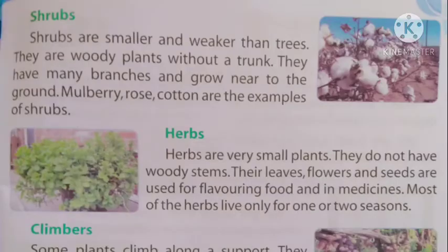अब आते हैं shrubs के बारे में जानते हैं। Shrubs means झाड़ियाँ - जो झाड़ियों वाले पौधे होते हैं जिनमें बहुत ज़्यादा branches होती हैं। Shrubs are smaller and weaker than trees. They are woody plants without a trunk but with many little branches growing near to the ground. Mulberry, rose, cotton are examples of shrubs. शहतूत, गुलाब, कपास ये सब झाड़ियों के उदाहरण हैं।